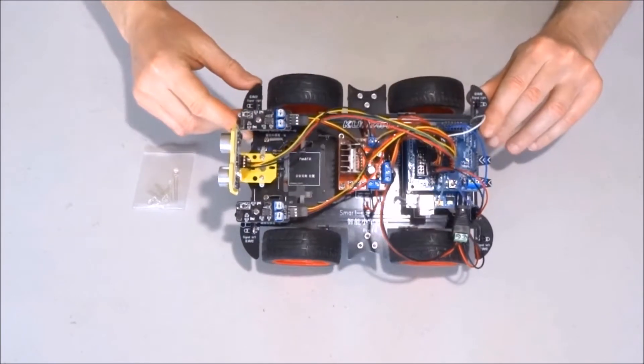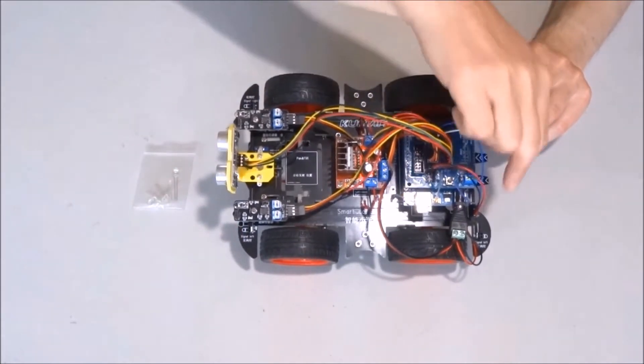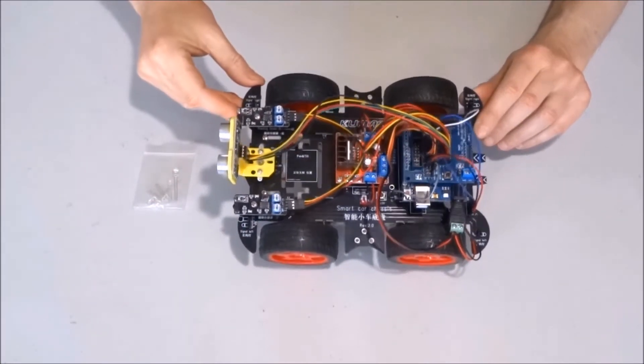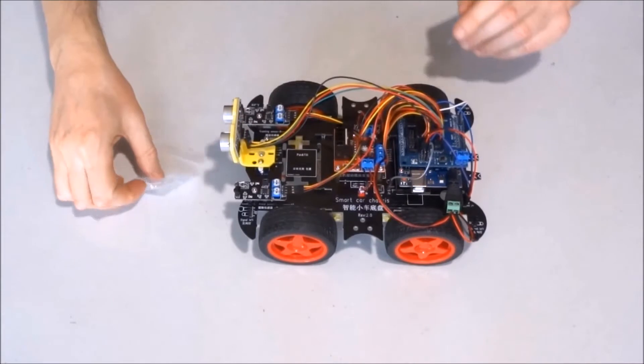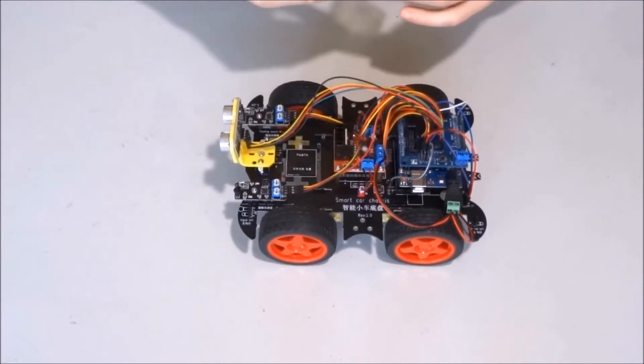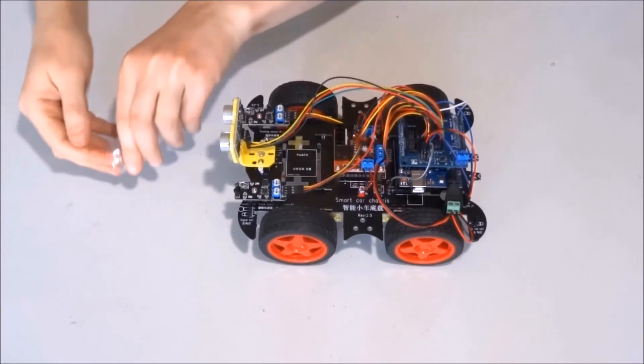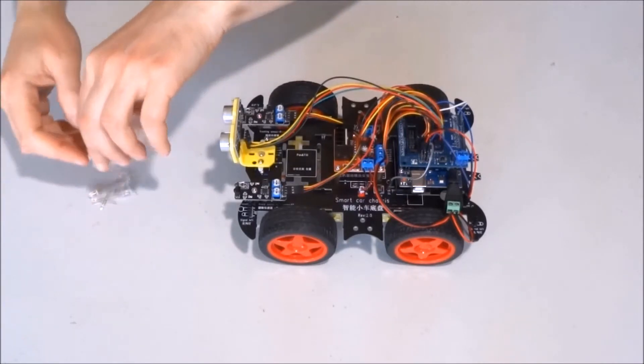Now we can go ahead and install the LEDs for the light and turn signals on the car. The LEDs are in this small bag. There are two types: two big LEDs for the lights and four small ones for the turn signals.